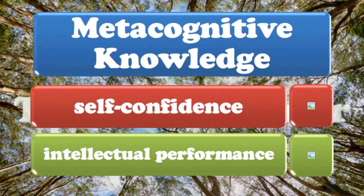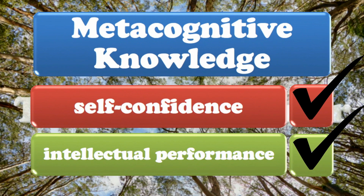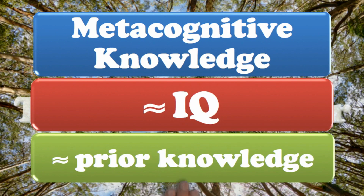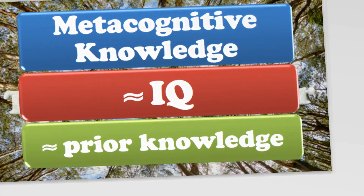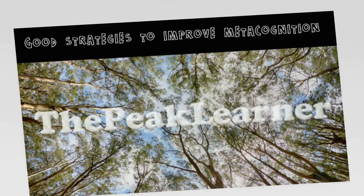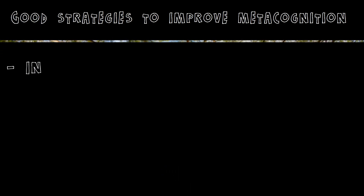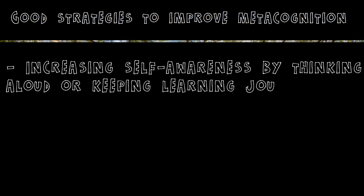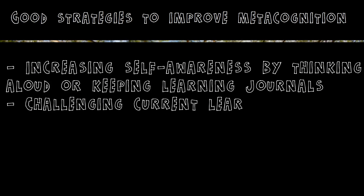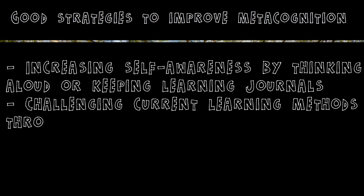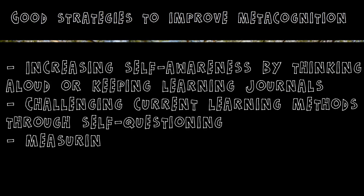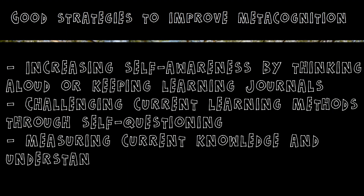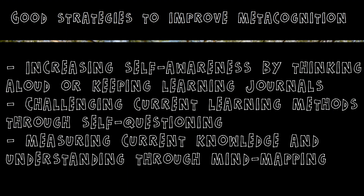Metacognitive knowledge can really improve self-confidence and intellectual performance. It has been shown to compensate for IQ and lack of prior knowledge. Good strategies to improve metacognition include increasing self-awareness by thinking aloud or keeping learning journals, challenging current learning methods through self-questioning, and measuring current knowledge and understanding through mind mapping.